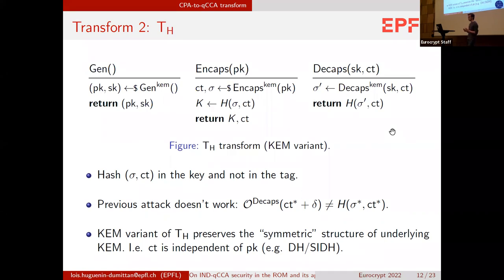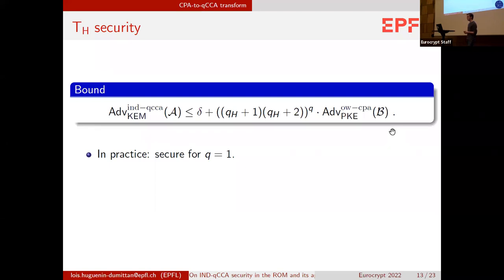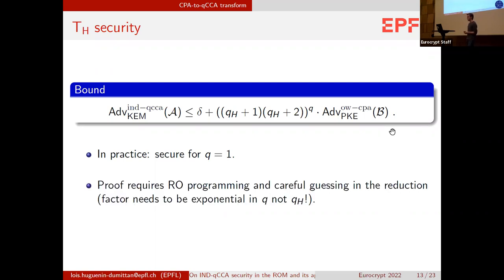What's nice about this transform is that it preserves the symmetric structure of the underlying KEM if it exists. By symmetric structure I mean, like in Diffie-Hellman or SIDH, where the ciphertext does not depend on the public key — Alice's share does not depend on Bob's share. The KEM output by this transform will preserve this symmetric structure, which is not the case in the first transform or in the Fujisaki-Okamoto transform. We get a security bound where QH is the number of queries to the random oracle. The proof requires quite a lot of random oracle programming and careful guessing in the reduction, because we want the factor to be exponential in Q, which is constant, and not in QH, which can grow with the security parameter.